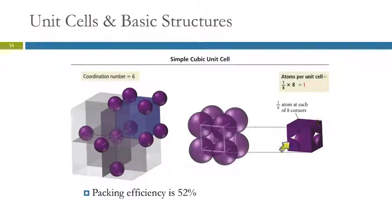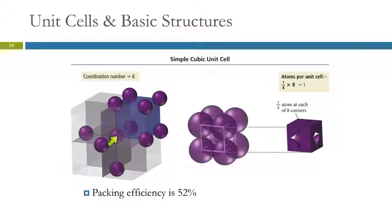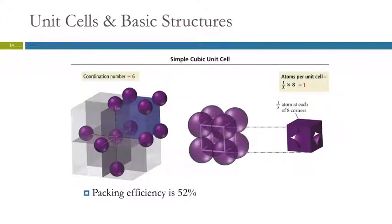Here's another way to look at that. The unit cell goes from the center of each atom, so it has 1/8 of each of those atoms in it. We can look at the coordination number by looking at an atom on the edge of one unit cell — it's in direct contact with 1, 2, 3, 4, 5, 6 other atoms. It's directly touching 3 in its unit cell, plus atoms in the adjacent unit cells. This has a packing efficiency of 52%, meaning 48% is empty space.